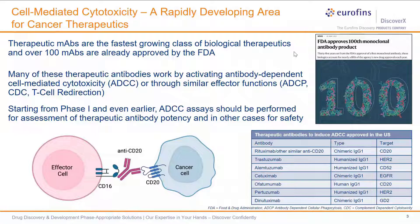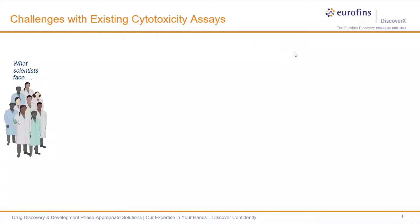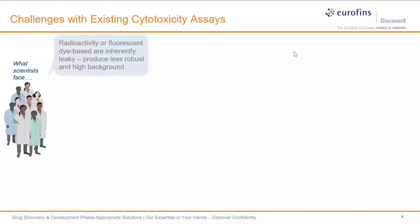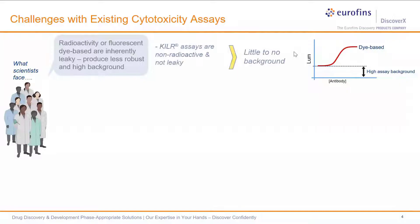A number of assay formats are required to evaluate effector function, which will be covered mostly in Erica's portion of the talk. Cytotoxicity assays are an important part of assessing effector-mediated functions such as ADCC. Some existing assays have drawbacks — for example, assays based on radioactivity or fluorescent dyes can be inherently leaky, where the dye is pumped out of certain target cells, leading to less robust assays and often high backgrounds. We have developed a platform called KILR that is non-radioactive and also non-leaky, which leads to lower background and better assay windows.